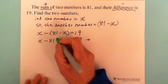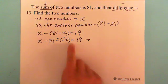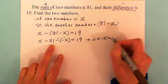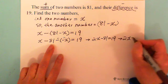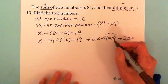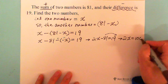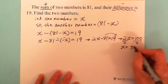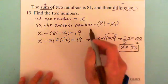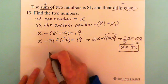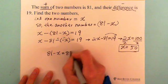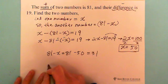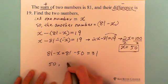So we have 2x minus 81 equals 19. Moving negative 81 to the other side by adding 81 to 19, we get 2x equals 100, and dividing both sides by 2, we get x equals 50. So one number is 50. The other number is 81 minus x, which is 81 minus 50, giving us 31. So the two numbers are 50 and 31.